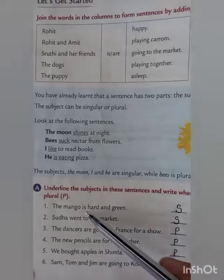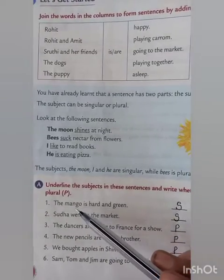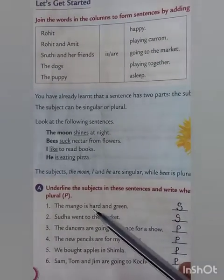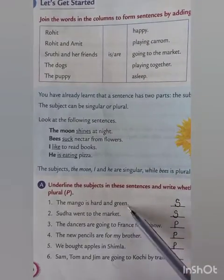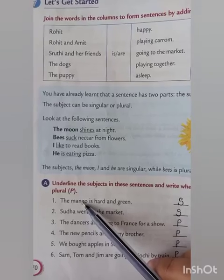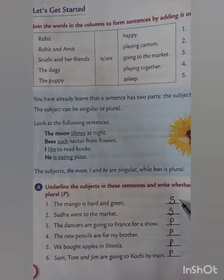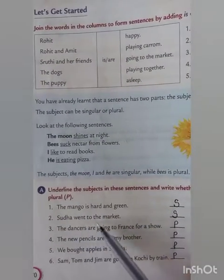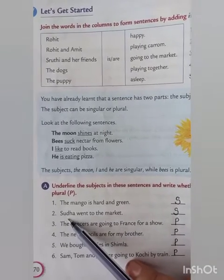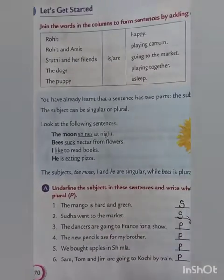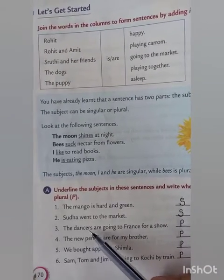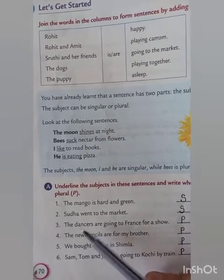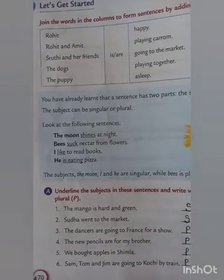Now this is one exercise in which for a singular subject you have to write S, and for a plural subject you have to write P. The mango is hard and green — the mango is the subject and it is singular, so we write S. Sudha went to the market — Sudha is singular, so we write S. The dancers — dancers is plural, so we write P.